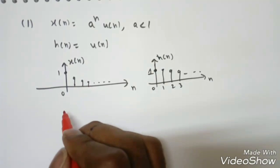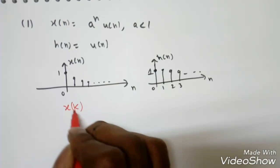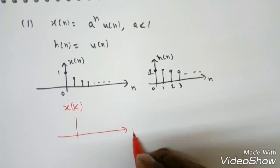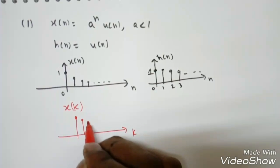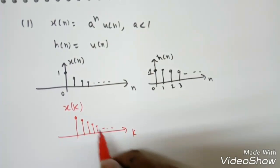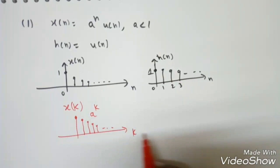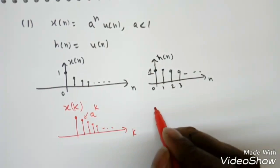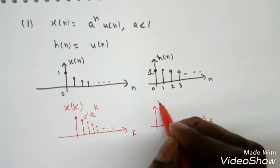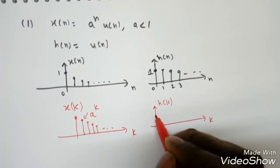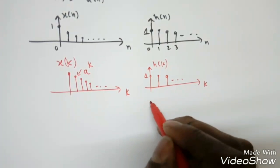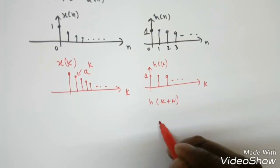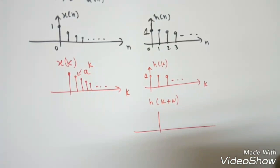We change the domain from n to k. x(k) is represented along the k-axis with a decreasing sequence, i.e., a^k. Similarly h(k) is constant at all instants of time. We then need to form the shifted and reversed version: h(n−k).